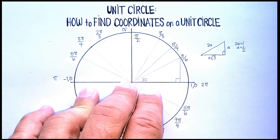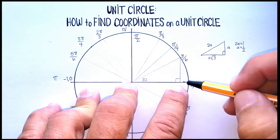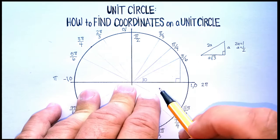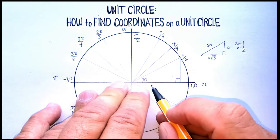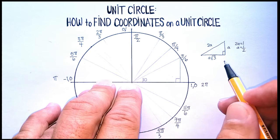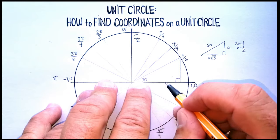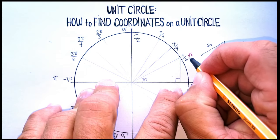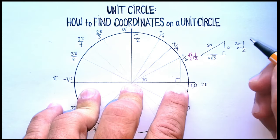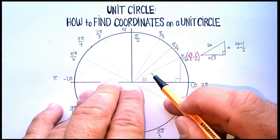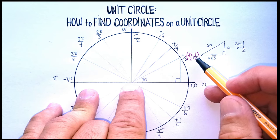If a is 1/2, that's our y value. Our x value would be a√3, so that's (1/2)√3, which is √3/2. So our coordinate for pi/6 on the unit circle is (√3/2, 1/2).